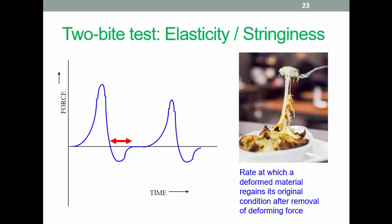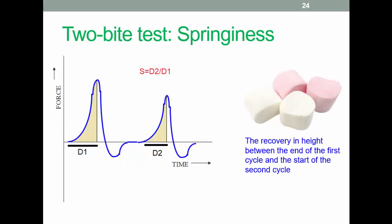Springiness - the classic example of springy food would be marshmallows. You squeeze them and they return to their shape. Springiness is the degree to which the food returns to its original height after being compressed. Again, it's calculated as the ratio of the two distances here rather than the areas.